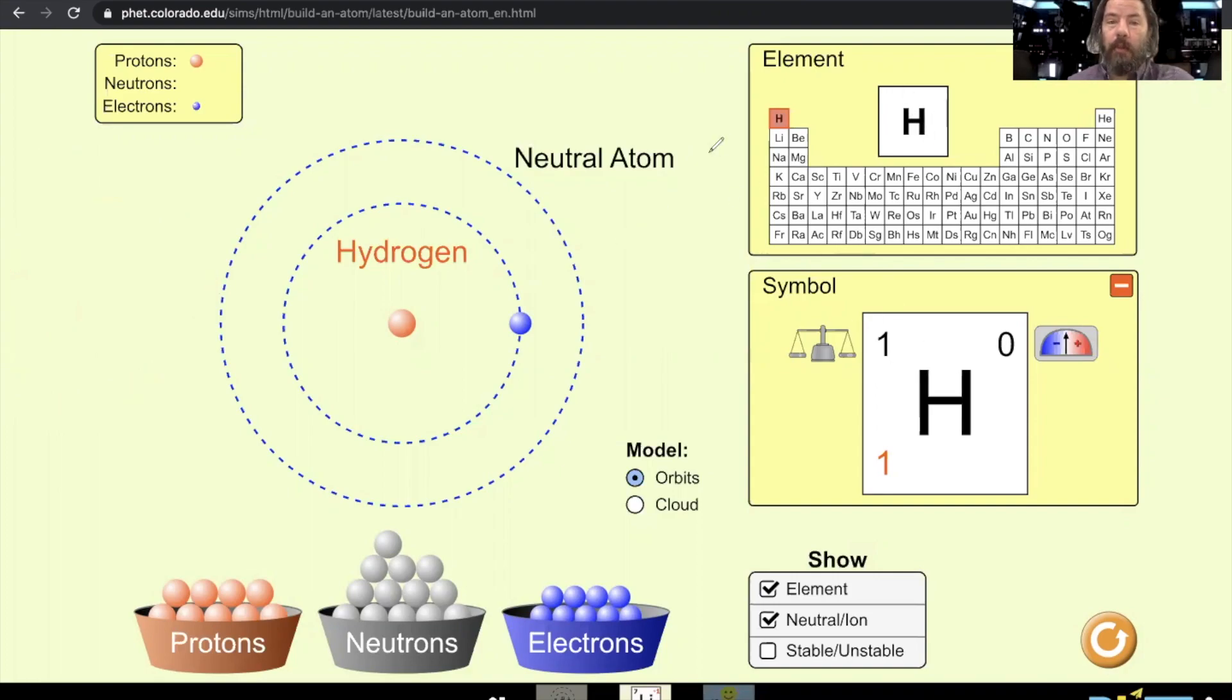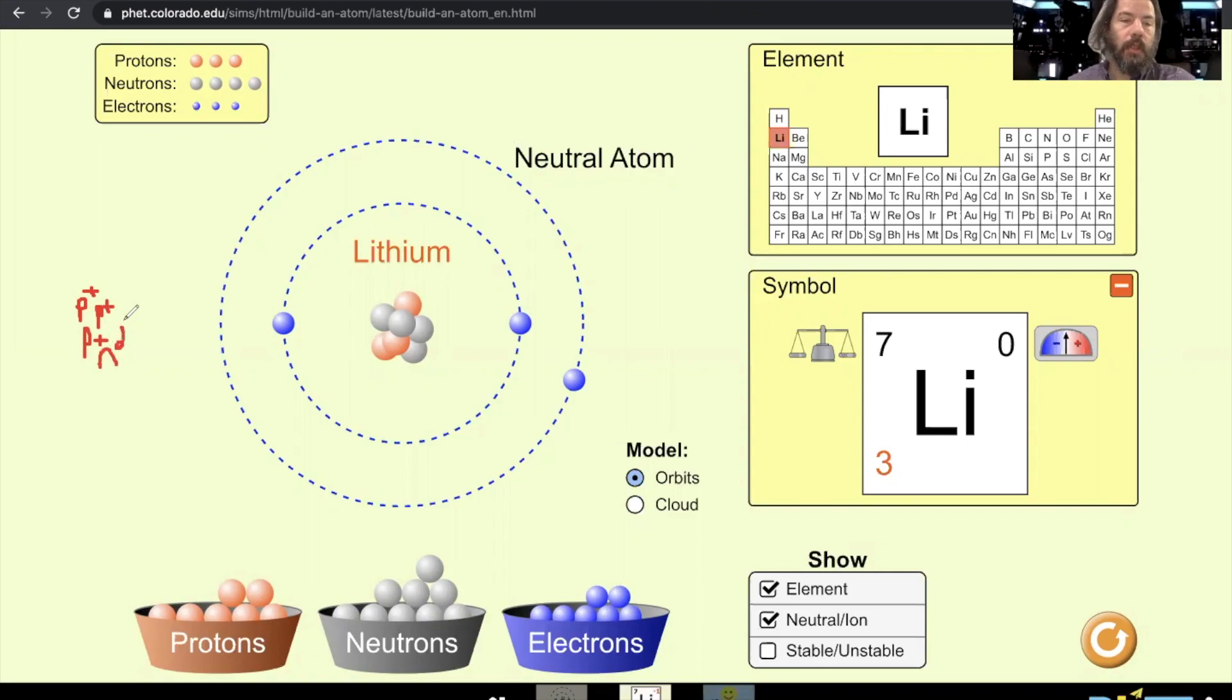So let's draw an atom of lithium. So if I'm going to draw this, I would go p positive, p positive, p positive. So I got three protons, and then n0, n0, n0, n0. Now you can put those in circles if you want. I probably would myself, but sometimes that's messy and hard to see. So in this case, I'm going to kind of back up here, but I've got one, two, three protons labeled with the charge, and then one, two, three, four neutrons.